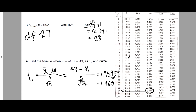For the Z distribution or normal distribution, Z scores go up to 2 decimal places because of the table. But for the T table, values go up to 3 decimal places. Also, in the standard normal distribution table, the numbers represent areas or probabilities. Here in the T table, the values are T-values, not areas. The areas in the T table are represented by the alpha values on top.